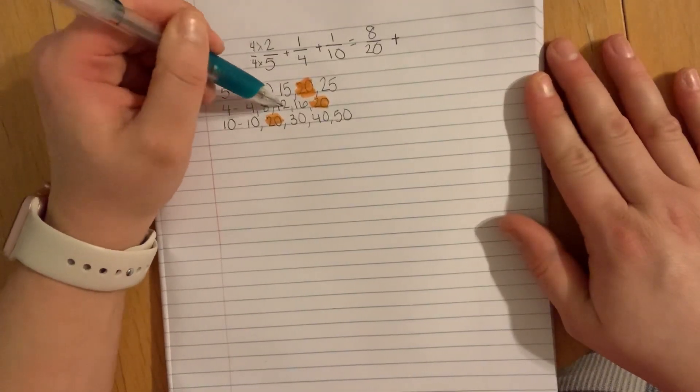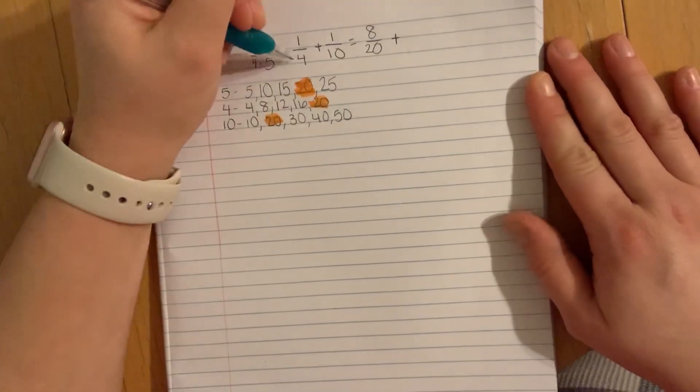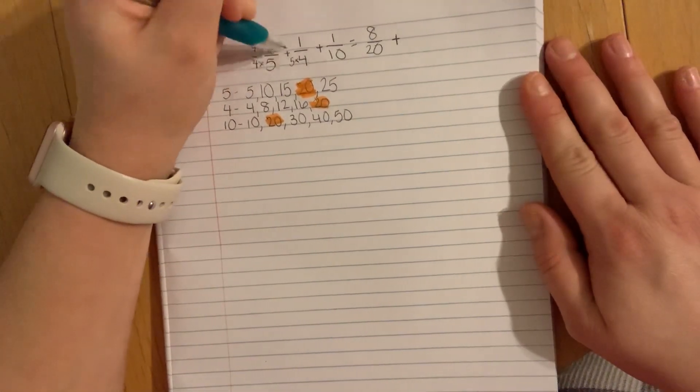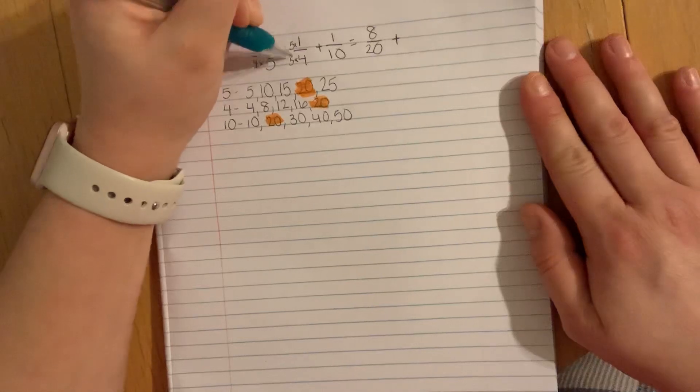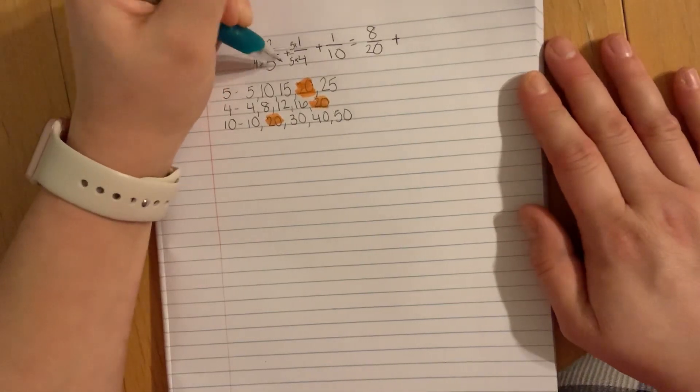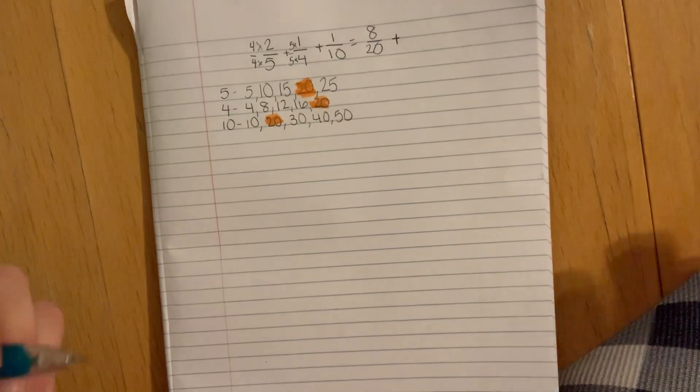Now we have 1 fourth. We have to multiply 4 by 5 to get to 20. Again, you have to multiply the numerator and denominator because then you have 5 over 5, equivalent to 1. You get 5 twentieths.